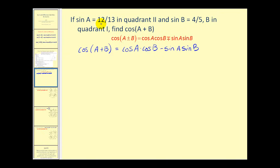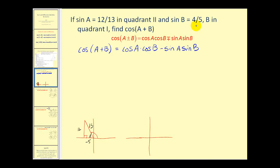Let's sketch these angles in standard position. For angle a in the second quadrant, the reference angle gives us opposite over hypotenuse equal to 12 over 13. This is a 5-12-13 right triangle, so the adjacent side is labeled negative 5 since we are in the second quadrant. For angle b in the first quadrant with sine of 4/5, this is a 3-4-5 right triangle, so the adjacent side has length 3.